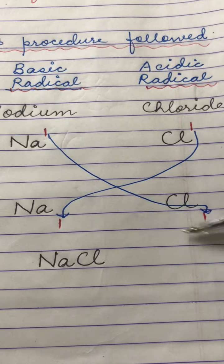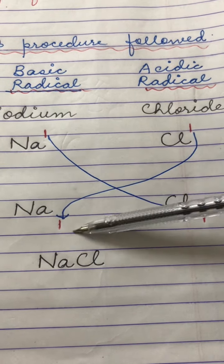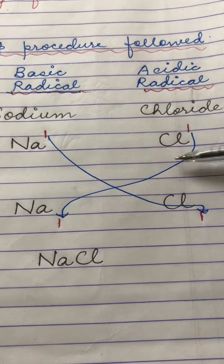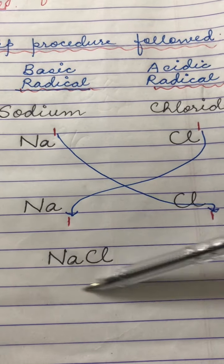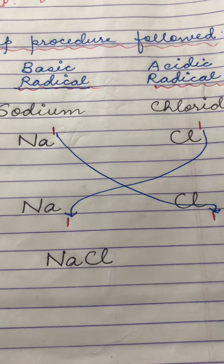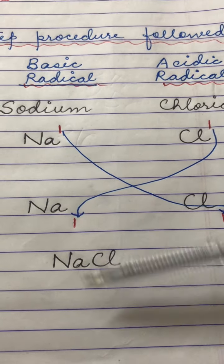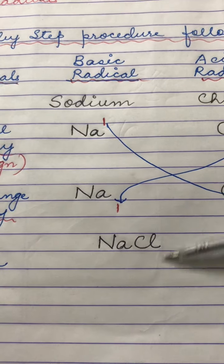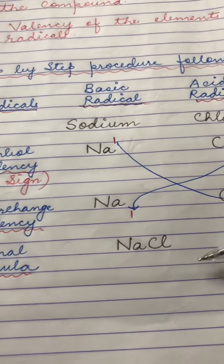So this is written as Na1 and this is written as Cl1. So we have done a crisscross putting arrows. In the final answer we do not put this one, because if we do not write this one it still means it is one. So the final answer becomes NaCl. This is how we come to the conclusion of writing a chemical formulae.